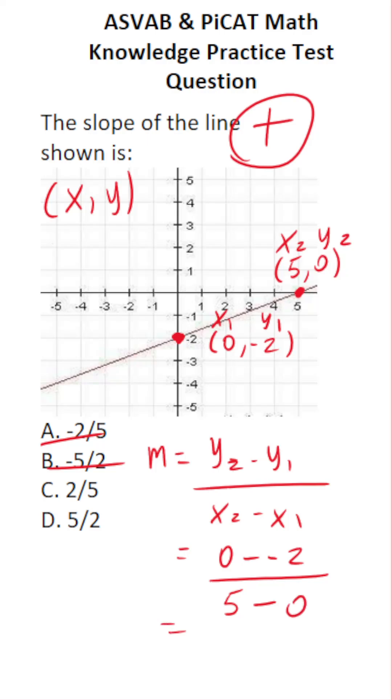Let's work this out. 0 minus negative 2. Minus minus becomes plus. So this is 2. 5 minus 0 is 5. So the slope of this line is 2 over 5c.